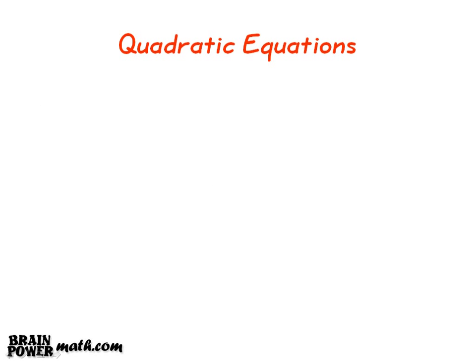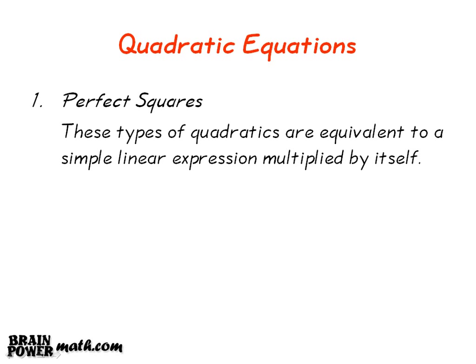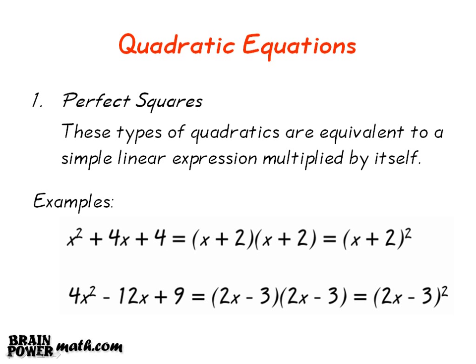Let's look at the perfect squares method. The types of quadratics that can be solved like this are equivalent to a simple linear expression multiplied by itself. The first example is: x squared plus 4x plus 4 is equal to (x plus 2) multiplied by (x plus 2), which is equal to (x plus 2) all squared. The second example is: 4x squared minus 12x plus 9 is equal to (2x minus 3) multiplied by (2x minus 3), which is equal to (2x minus 3) all squared.